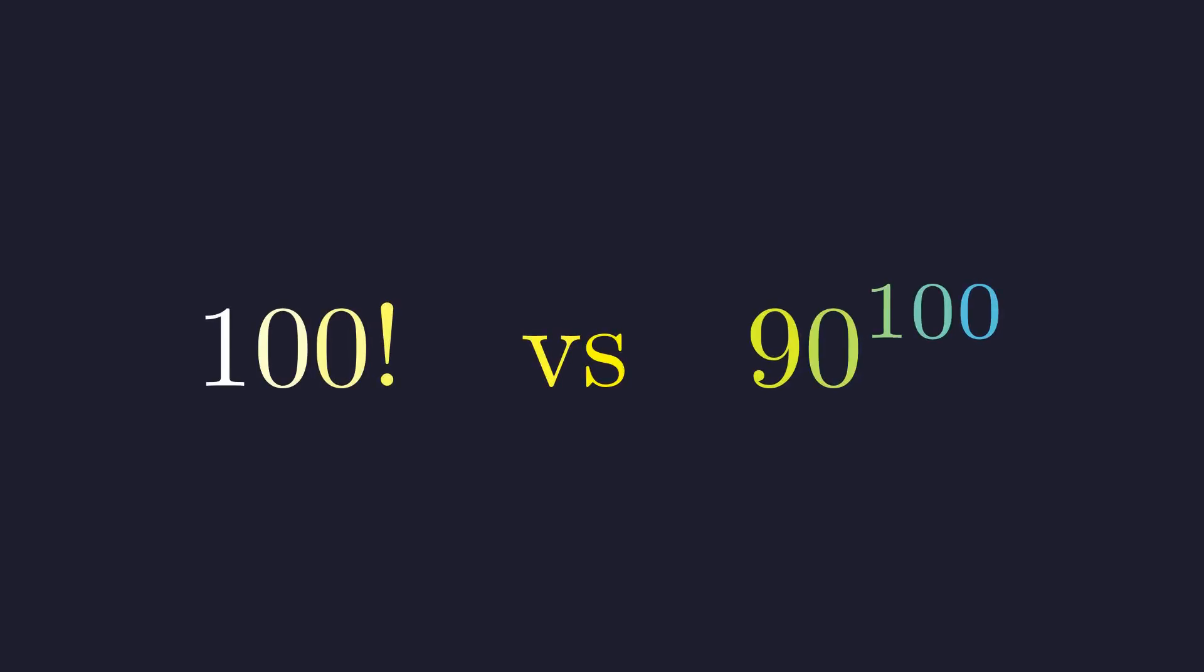Welcome back to Mental Math. Today we have a battle of mathematical giants: 100 factorial versus 90 to the power of 100. Which of these colossal numbers is larger?